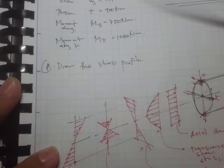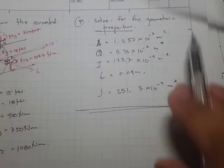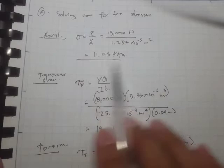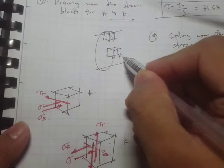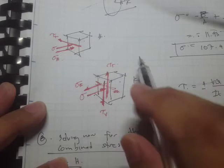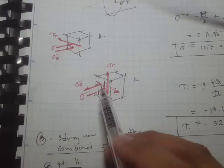Here's our X axis, Y axis, and Z axis. Because of those internal forces, we can draw the stress profile. We have the geometric properties and the internal forces, so we can solve for the stresses. We have the values of transverse shear, torsion, moment along Y, and moment along Z. Here's our K and H shown in a rotated illustration — these will be the stresses at K.